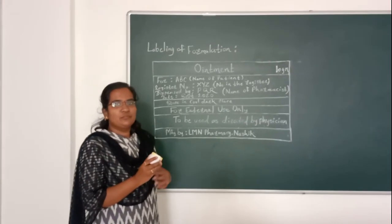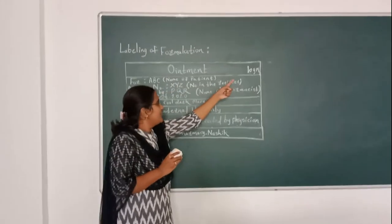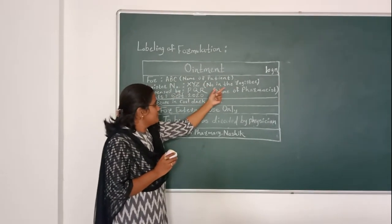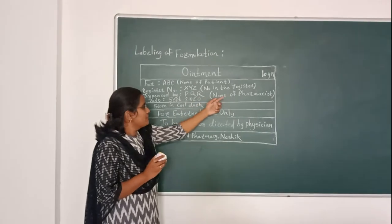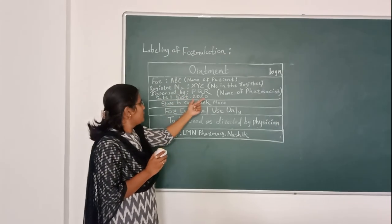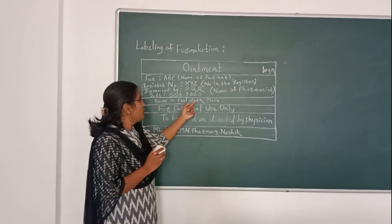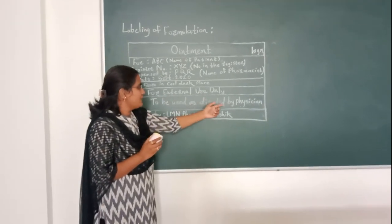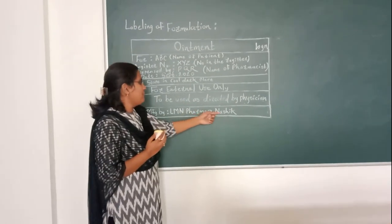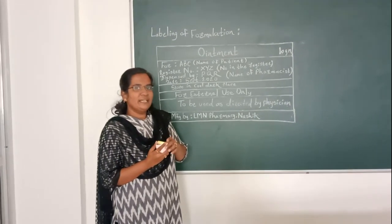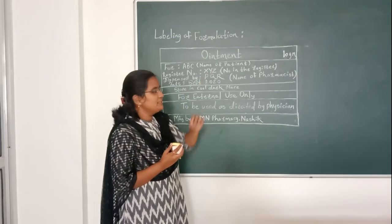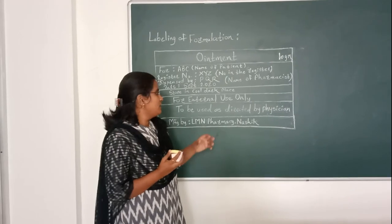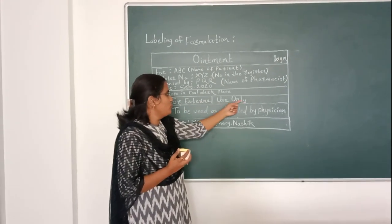For the label: item 10, name of patient — ABC; register number — XYZ; dispensed by — PQR (name of pharmacist); date — September 2020; storage condition — store in a cool place; for external use only; to be used as directed by physician; manufactured by — 11 Pharma. Result: 10 grams of ointment is submitted in a white plastic bottle for inspection, with special instruction on label as 'for external use only'. Thank you.